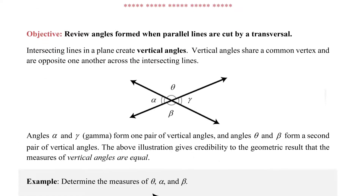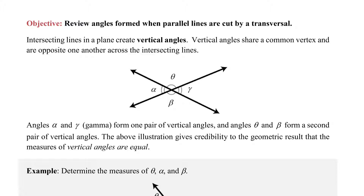Now let's talk about angles in relation to intersecting lines. When two straight lines intersect, you get vertical angles. This angle theta is actually equal to angle beta — when two straight lines cross, angles that are opposite are called vertical angles, and vertical angles are equal. So theta equals beta. Similarly, alpha and gamma are vertical angles and are equal as well.